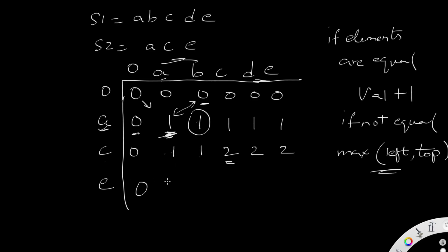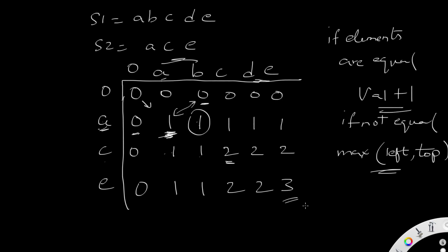Continuing the traversal for S2's E row: E vs A — not equal, max of neighbors gives 1. E vs B — not equal, max of 1 and 1 is 1. E vs C — not equal, max of 1 and 2 is 2. E vs D — not equal, max of 2 and 2 is 2. E vs E — equal! So we increment the diagonal: 2 + 1 = 3. Our last element in the matrix is 3.